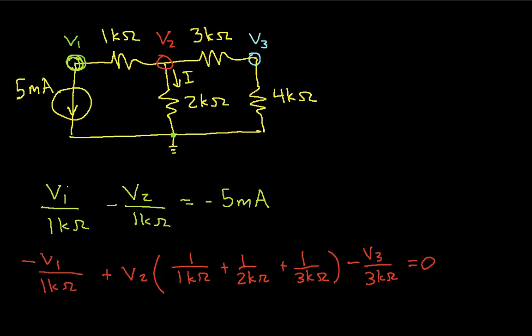Again, the way I got this, I have node 2 connected to node 1 and to node 3. That basically gives me the 1k ohm and the 3k ohm. Also, it's connected to my reference node. That gives me the 2k ohms. The connection to node 1 gives me the minus v1 over 1k ohm. And the connection to node 3 gives me the minus v3 over 3k ohms.